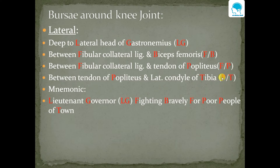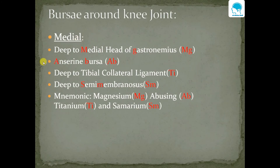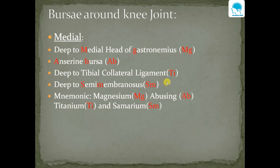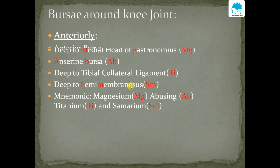Bursae on the medial aspect: these are deep to the medial head of gastrocnemius, the anserine bursa deep to tibial collateral ligament, and deep to semimembranosus muscle. We can remember these using the mnemonic 'Magnesium Abusing Titanium and Samarium' — Mg, Ti, and Sm from the periodic table. Mg stands for medial head of gastrocnemius, Ti for tibial collateral ligament, and Sm for semimembranosus muscle.